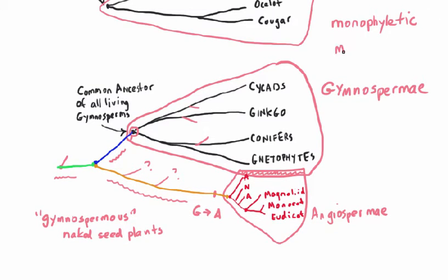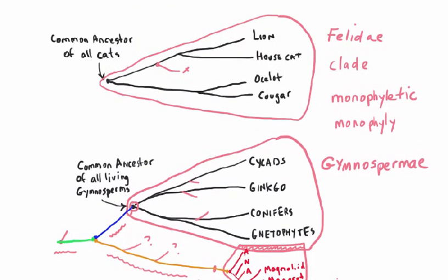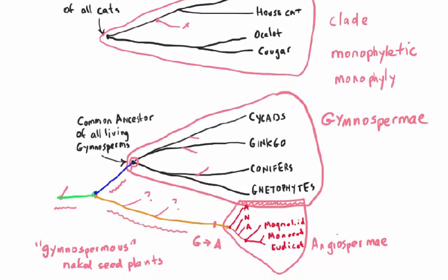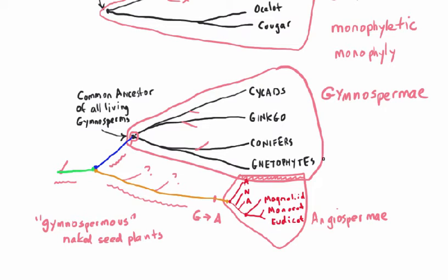The other important requirement of monophyly — the state of being a clade or monophyletic — is that every single descendant of the ancestral mother of all cats, or the mother of all gymnosperms, or the mother of all angiosperms, must be included within the clade. So if it were true that angiosperms evolved from the gnetophytes, that would make the Gymnospermi no longer a clade, no longer a monophyletic taxon. We've got a new word for it: a paraphyletic taxon.